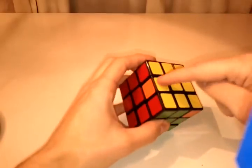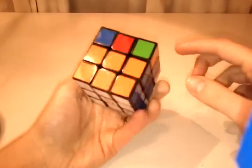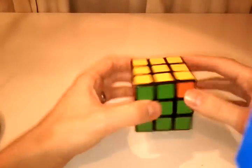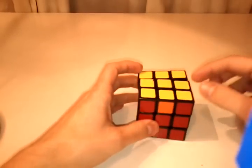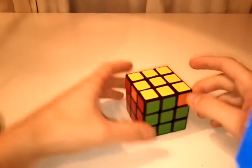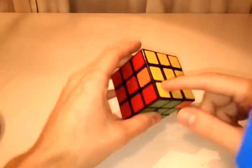The way to recognize it is you need to swap this edge with this edge and these two corners. You'll see two 1x1x2 blocks, one here and one here, together.